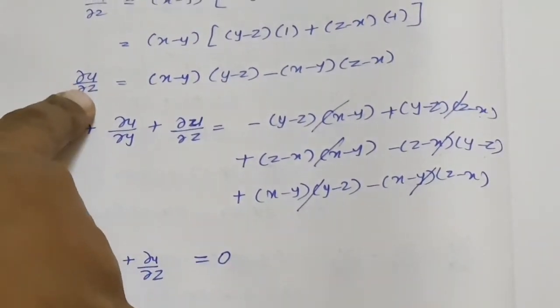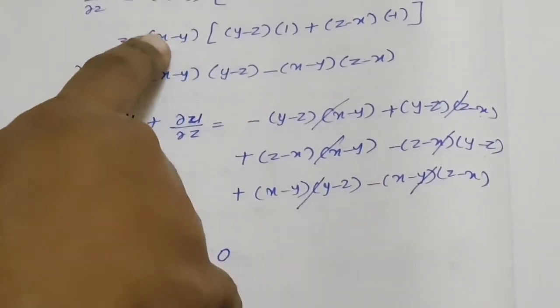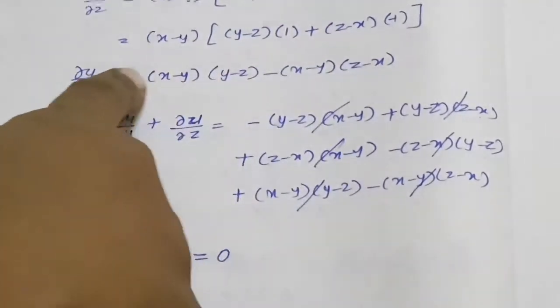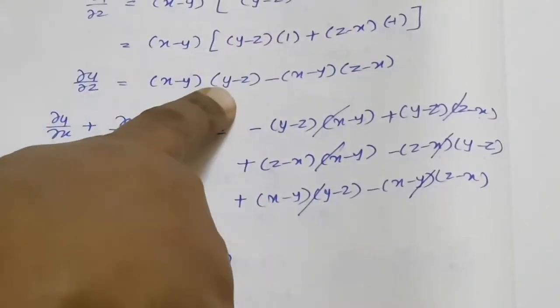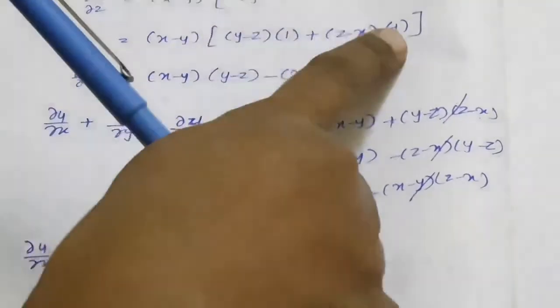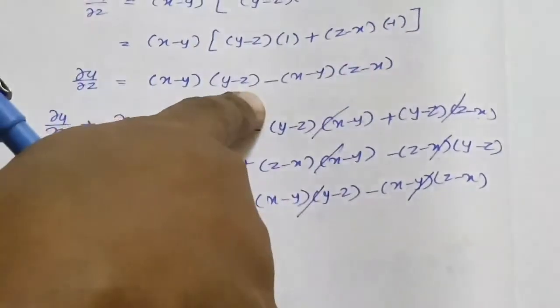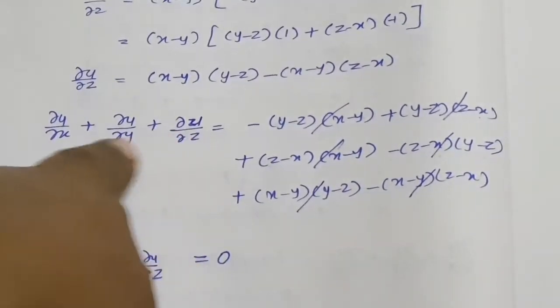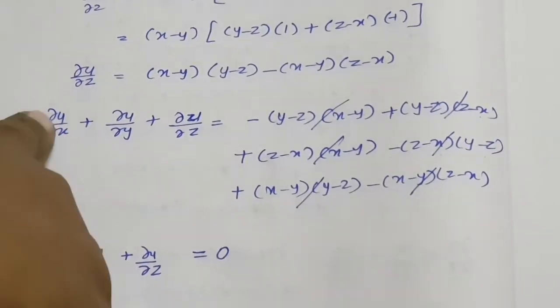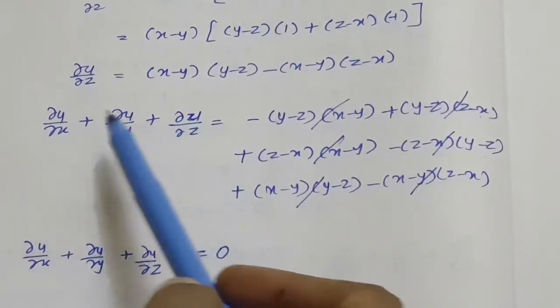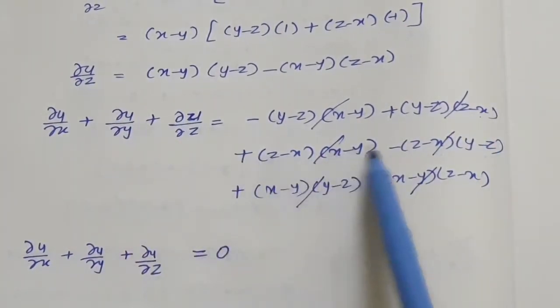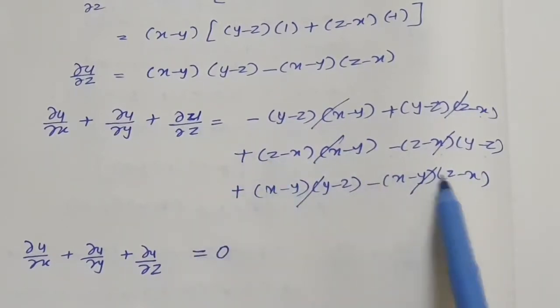So the derivative of u with respect to z equals (x minus y) multiplied by (y minus z) minus (x minus y)(z minus x). Now adding the left hand side: ∂u/∂x plus ∂u/∂y plus ∂u/∂z. We add the three answers together. ∂u/∂x value is minus (y minus z)(x minus y) plus (y minus z)(z minus x), ∂u/∂y value is (z minus x)(x minus y) minus (z minus x)(y minus z), and ∂u/∂z value is (x minus y)(y minus z) minus (x minus y)(z minus x).